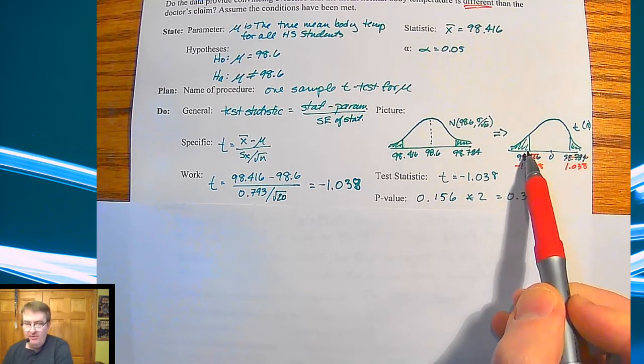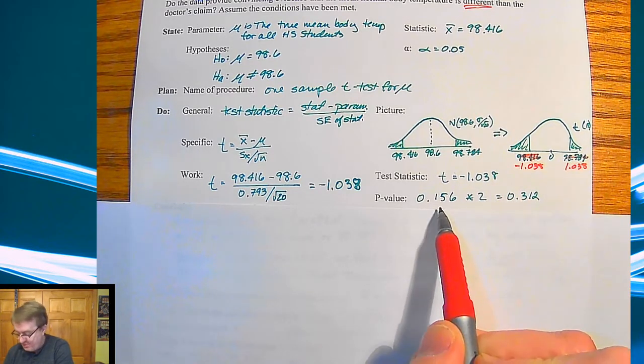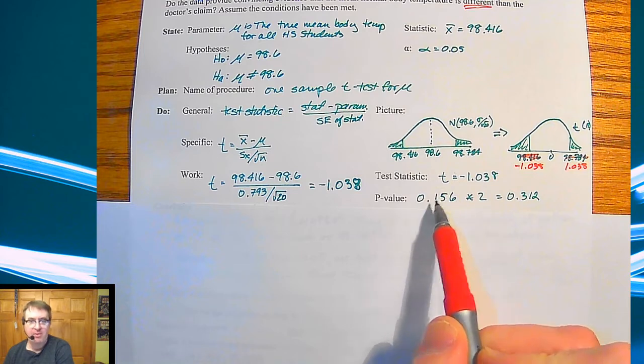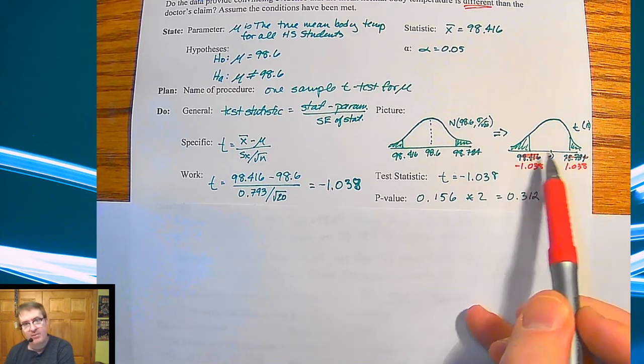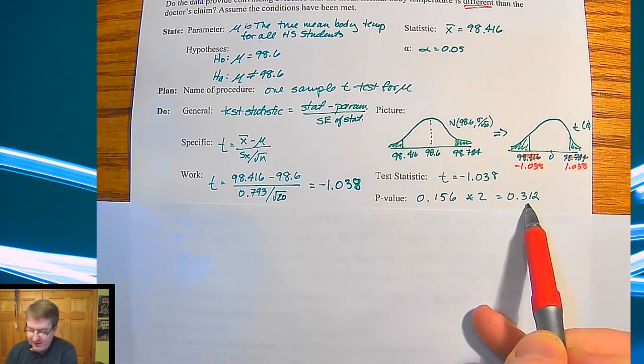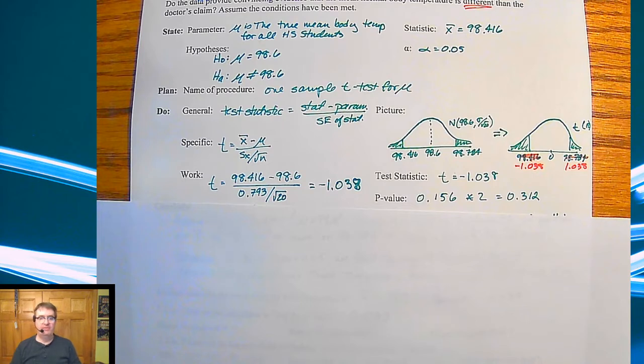Notice here, since we're doing two samples, we have to go both to the left and to the right. This value of 0.156 probability is one side. So we have to double it in order to get our actual p-value. So it's just over 30% chance that what we saw was going to actually happen.